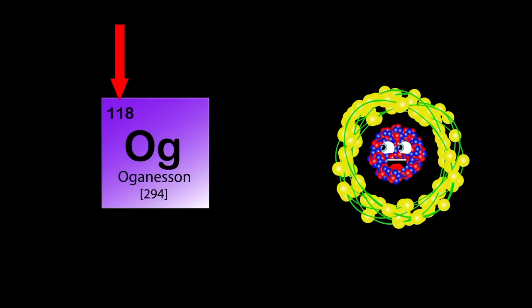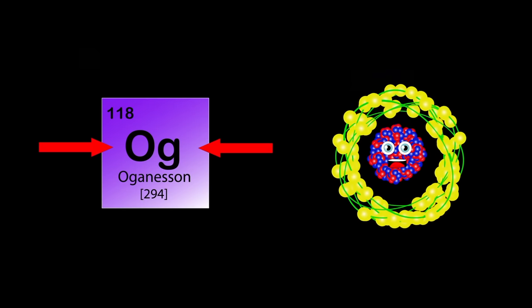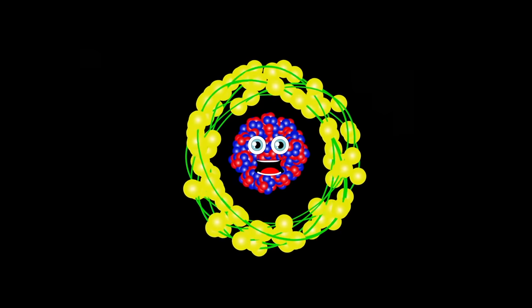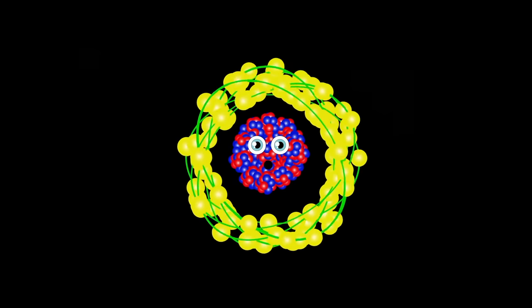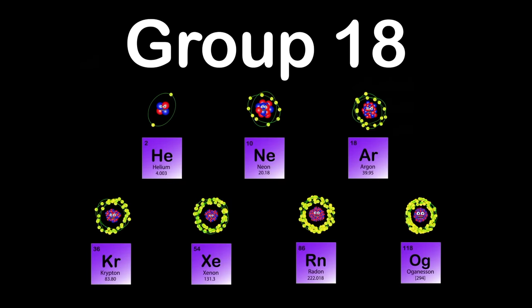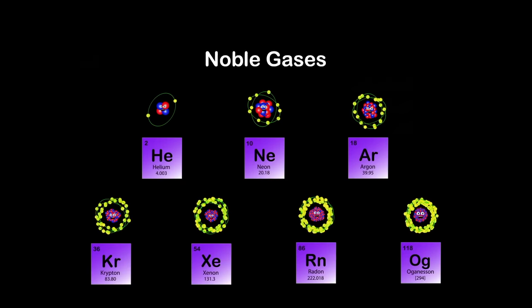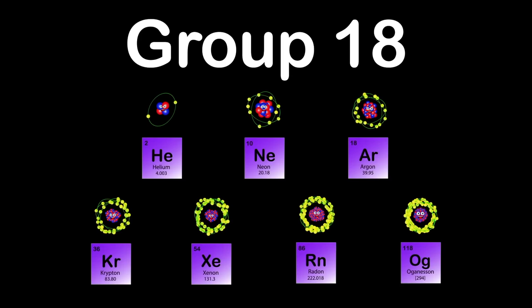I'm Oganesson. My atomic number is 118, my atomic mass is 294. I have the highest atomic number and mass of all known elements. Synthesized in 2002 by a team of scientists. We are the noble gases in group 18, with six elements and a seventh which is predicted to be, making up a group of chemical elements with similar properties.